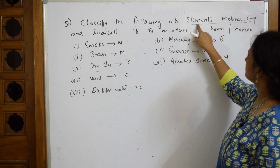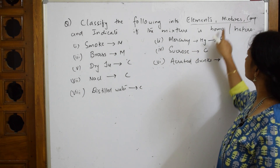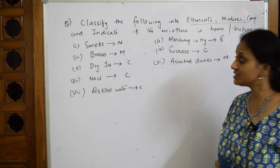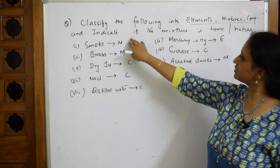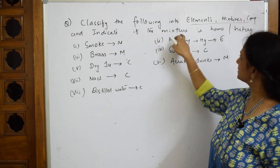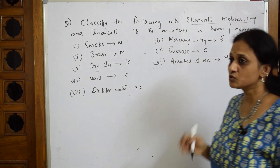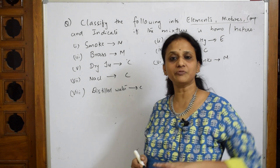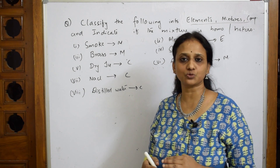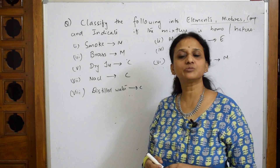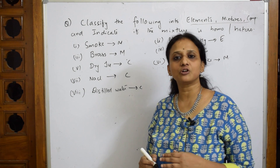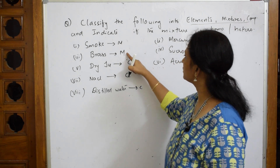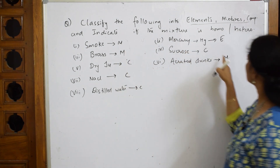I've divided into elements, mixtures, and compounds. Now they ask us to indicate whether the mixtures are homogeneous or heterogeneous. Homogeneous means having the same composition throughout; heterogeneous means different compositions. So here I have a mixture (smoke), here I have a mixture (brass), and here I have a mixture (aerated drinks).